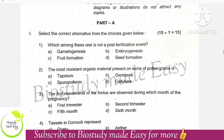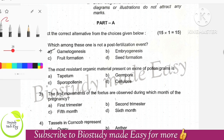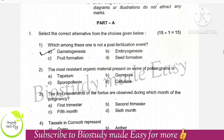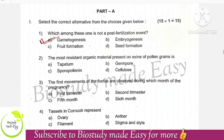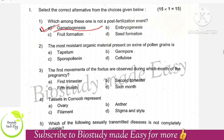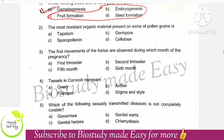First question: which among these is not a post-fertilization event? The right option is option A, that is gametogenesis. Gametogenesis is a pre-fertilization event — it occurs before fertilization. The other options are post-fertilization events.